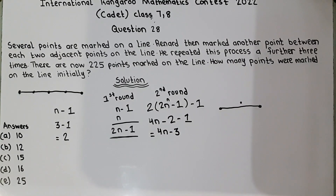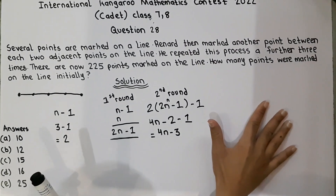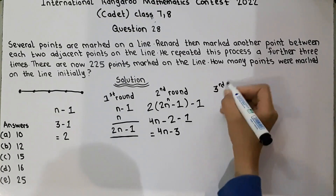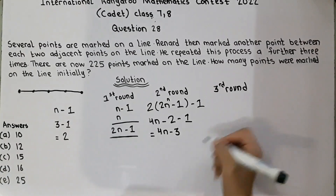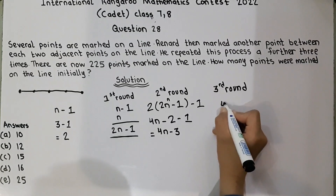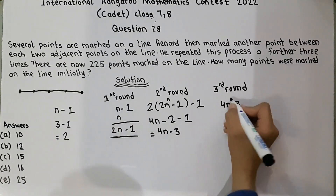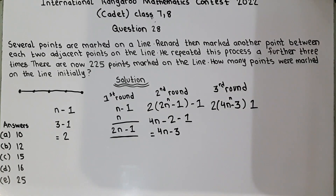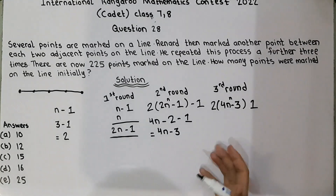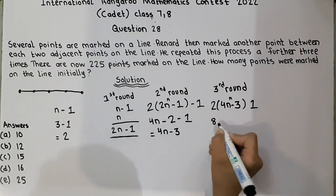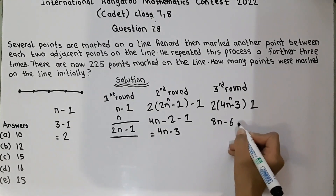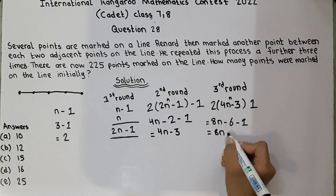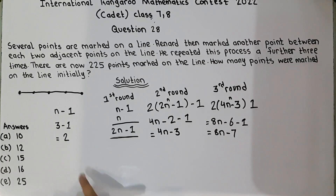Now we will do the third round. We have four n minus three. Applying the formula n minus one again, multiplying four by two gives eight, and minus three becomes minus six, then minus one, giving eight n minus six minus one, which equals eight n minus seven. We have completed the third round.